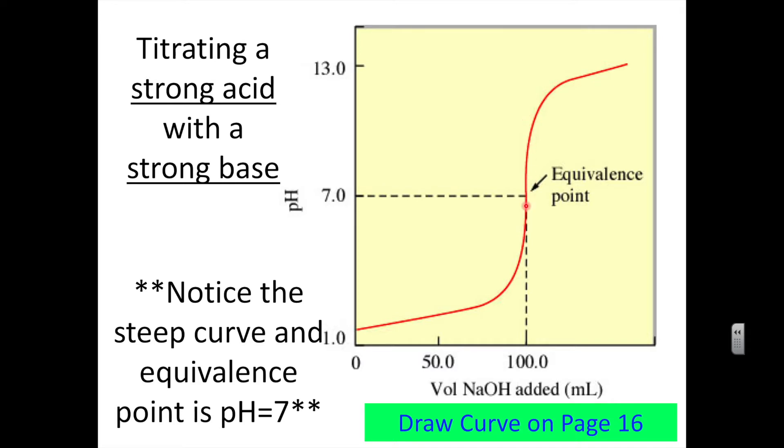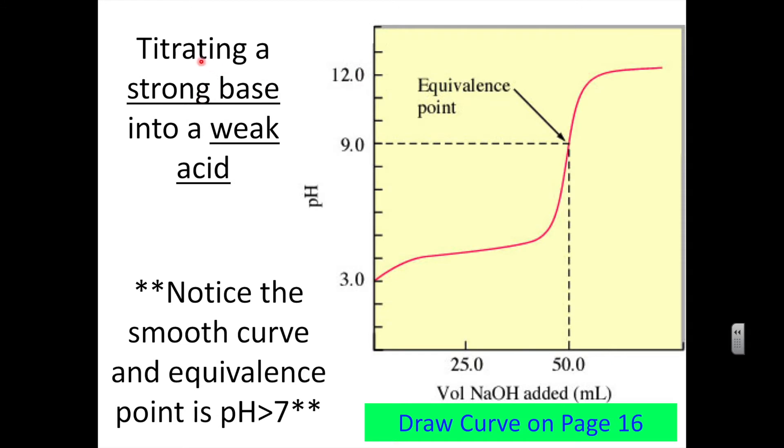When it very sharply rises, this is where it jumps and crosses what we call the equivalence point. The equivalence point is where the moles of acid and the moles of base equal each other. Sometimes this is called the stoichiometric point because we're going to use stoichiometry for this. Once we cross that point, the solution in that flask is all mostly base now - all the acid has been neutralized. Here is mostly acid and now here it's mostly base.